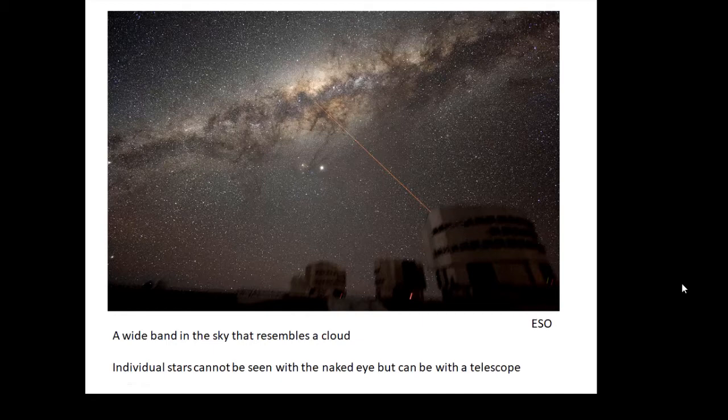If you go out in the countryside away from all light pollution on a nice dark night with clear skies, you will see this cloud stretching across the sky. It's very easy to mistake it for a cloud, but it's not a cloud—it's the Milky Way, a wide band in the sky that resembles a cloud.